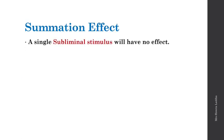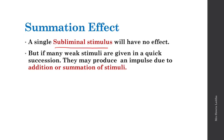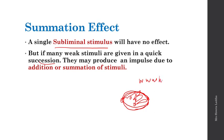Summation effect: a single subliminal stimulus will have no effect and will not produce any nerve impulse. But if many weak subliminal stimuli are given one after another in quick succession, they may produce a total additive or summation effect. Multiple weak stimuli applied rapidly one after the other may have a summative or additive effect and together may produce an impulse. So a single subliminal stimulus has no effect, but many weak stimuli in succession may produce an impulse through summation.